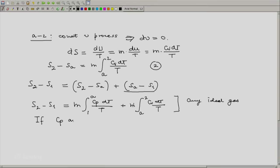If Cp and Cv are constants, then what happens? This equation gets simplified. We have Cp coming out of the integral sign, Cv also coming out of the integral sign and then we will get S2 minus S1 is M into Cp into logarithm of TA by T1 plus Cv into logarithm of T2 by TA.